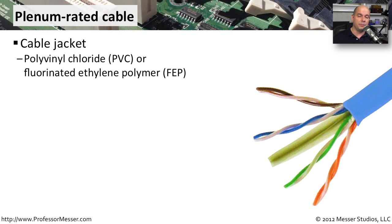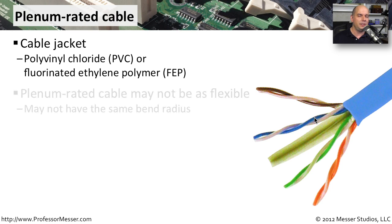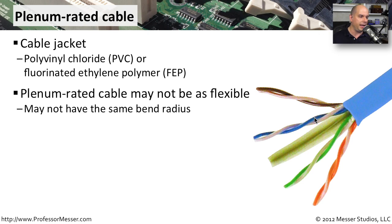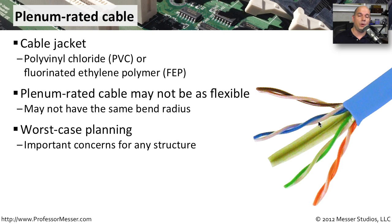The most important part of a plenum-rated cable is the cable jacket around the twisted pairs. This jacket may be PVC (polyvinyl chloride) or FEP (fluorinated ethylene polymer). This also causes the cable to be less flexible — it has a different bend radius and is not used for everyday cabling. The reason we use plenum cable is to limit what would happen if a fire occurred. A normal cable is much more flammable, and the plenum's fresh air supply could allow fire to move across a floor. Using plenum-rated cable minimizes that impact and limits the movement of fire.